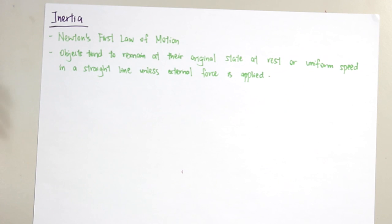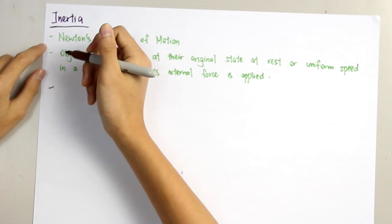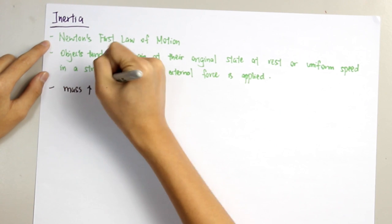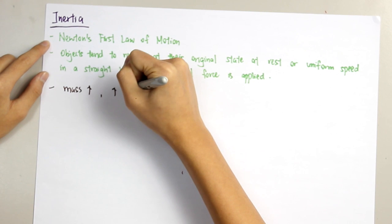Inertia is just a phenomenon and it has no unit. However, inertia is related to mass where the larger the mass, the greater the inertia.